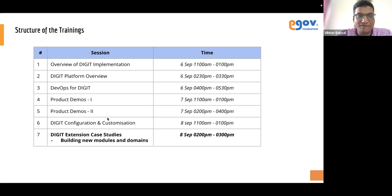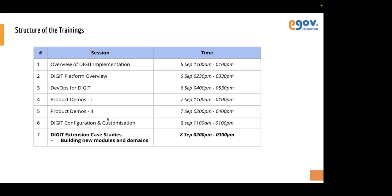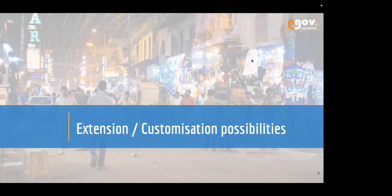Over to you Ganshyam. We are starting a session on DIGIT extension case studies — building new modules and domains. There are two parts: the first is on how we can design and architect new modular services on top of the DIGIT platform, and the second part is how we can run the development engineering cycle for this module from one of our co-creator partners. I'm handing over to Ganshyam to start on the design, and then I'll take over on the engineering process.